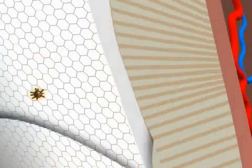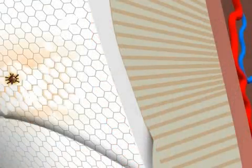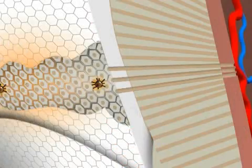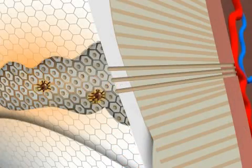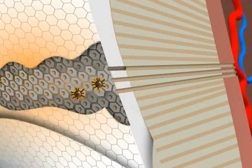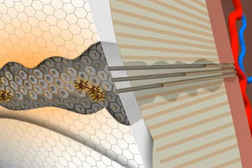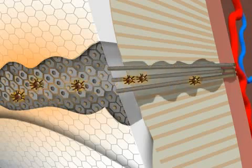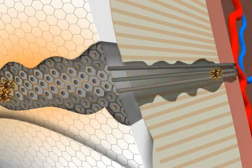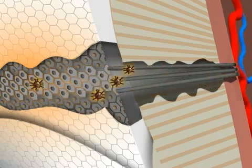A large tooth defect, for example due to a cavity, also means a large injury to the dentin. The probability of an inflammatory reaction of the pulp rises with the size of the dentin wound.